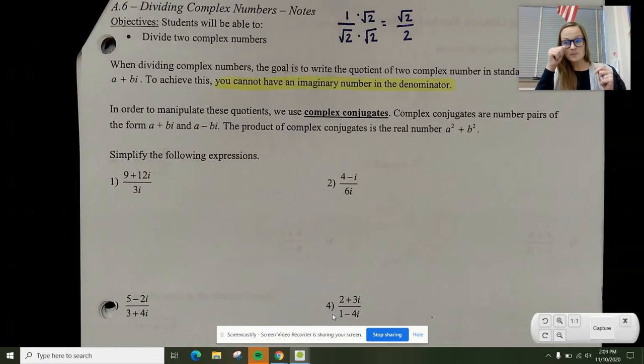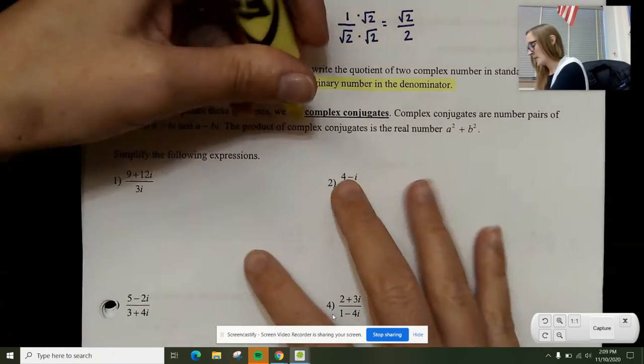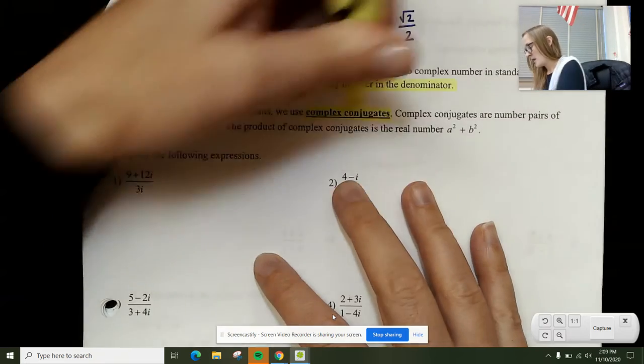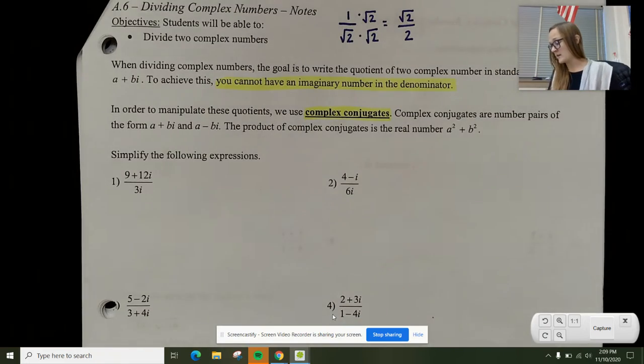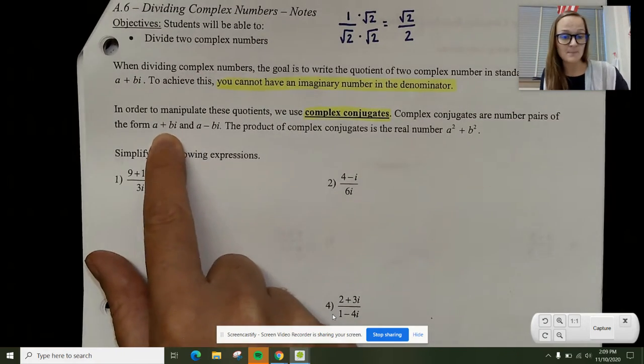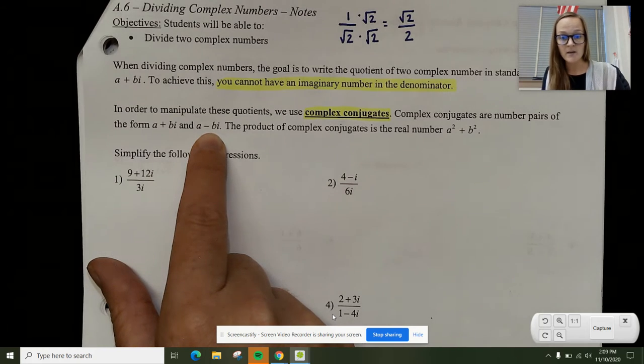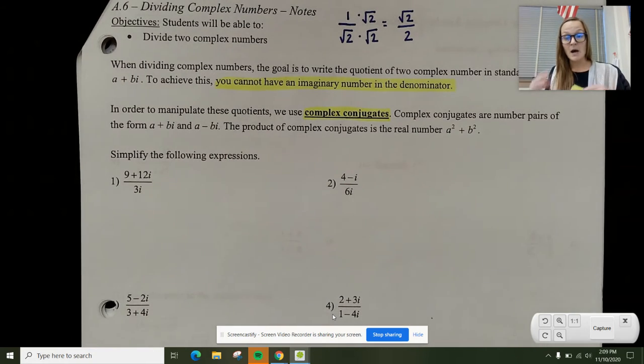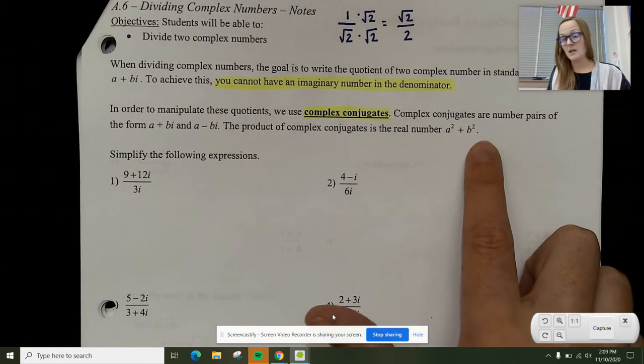When we did multiplication, remember some of the last examples that we did? We were able to get rid of the imaginary number by multiplying by what's called a conjugate. Complex conjugates are pairs of numbers in the form of a plus bi and a minus bi, so that your product is just a squared plus b squared.